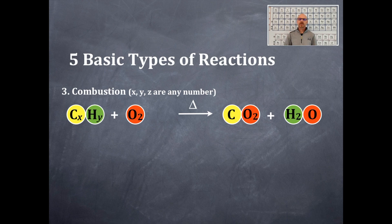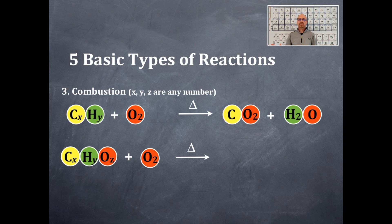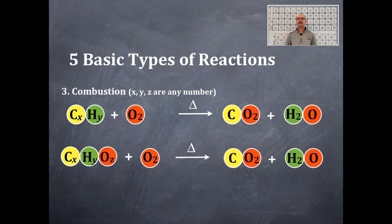There are two different typical combustion patterns. The other pattern is that you have carbons, hydrogens, and oxygens — CₓHᵧOz — plus molecular oxygen. X, Y, and Z can be any number, but you also have to have molecular oxygen, and above that arrow you're going to have a delta symbol. The products, again, are really simple: for every combustion reaction they're always the same — carbon dioxide and water.